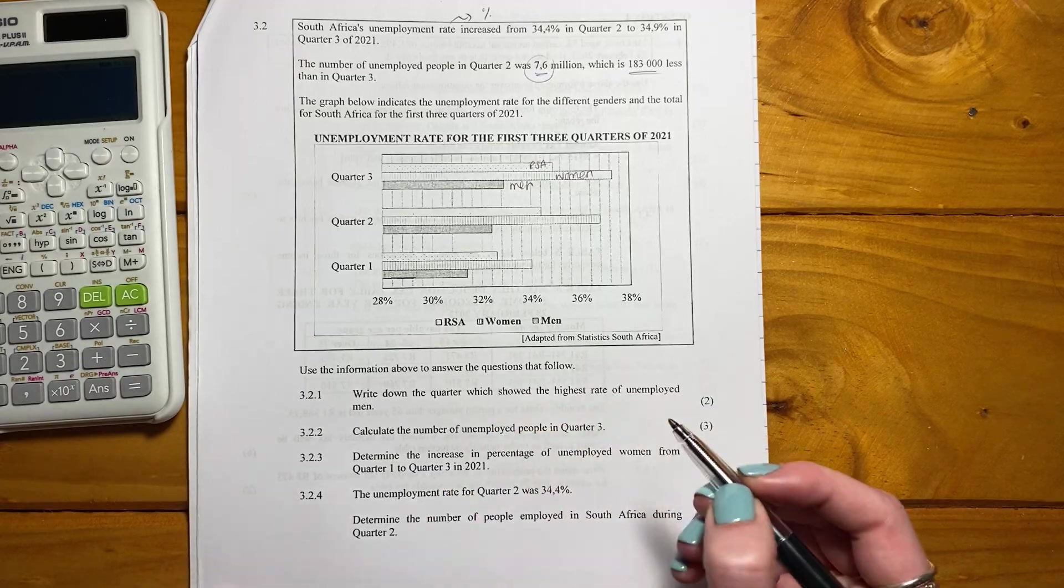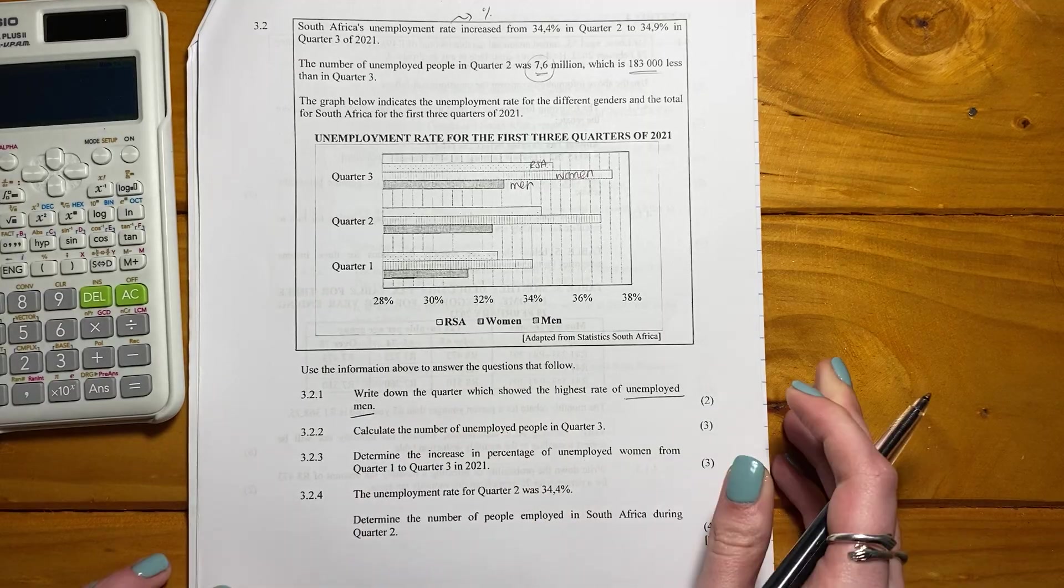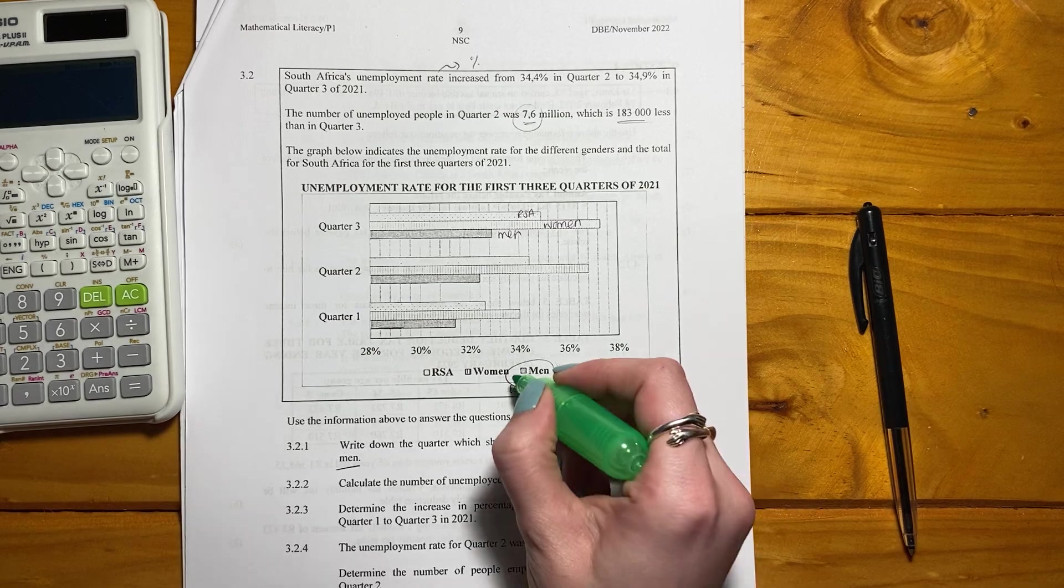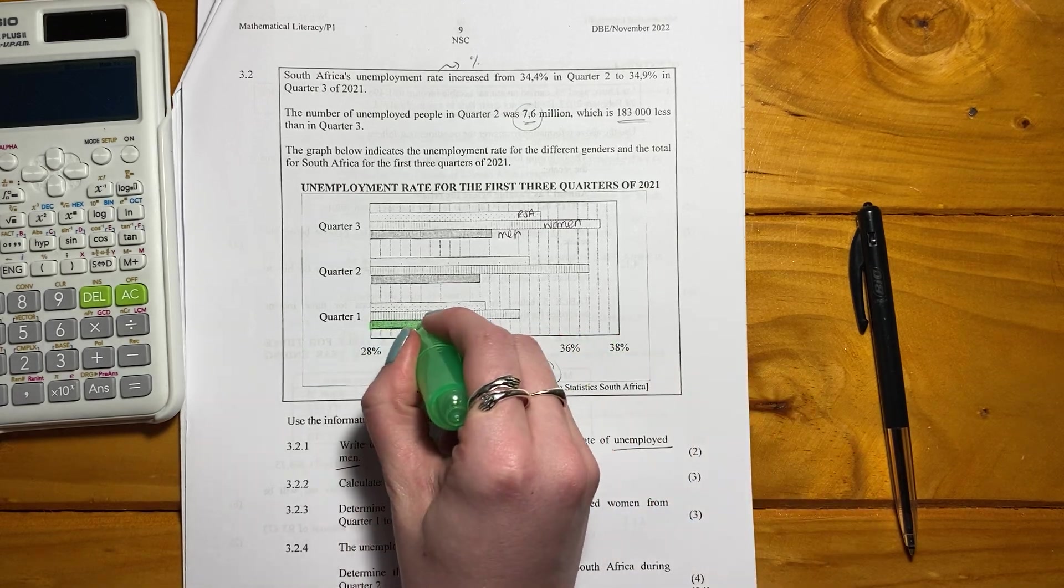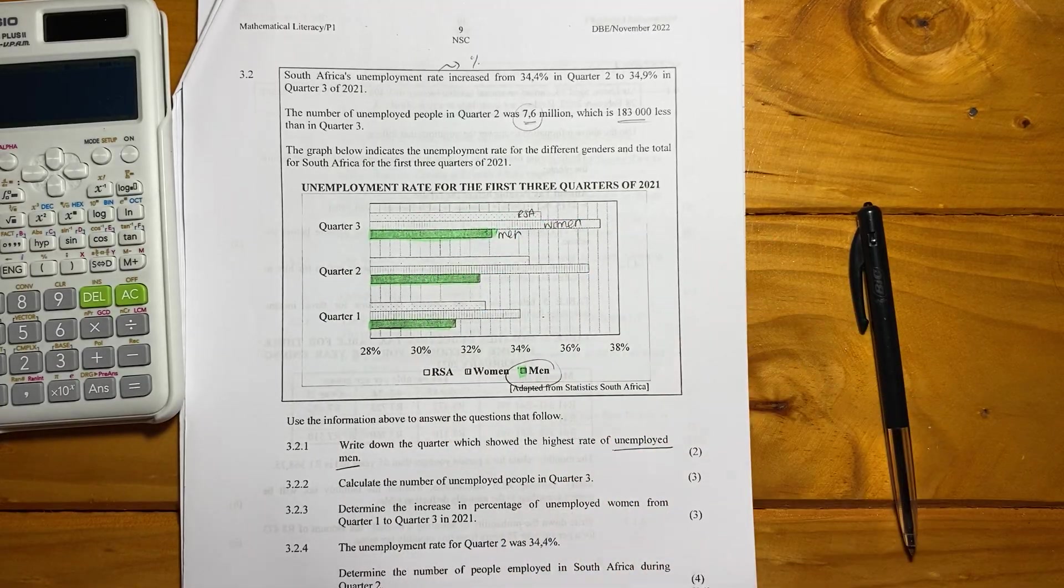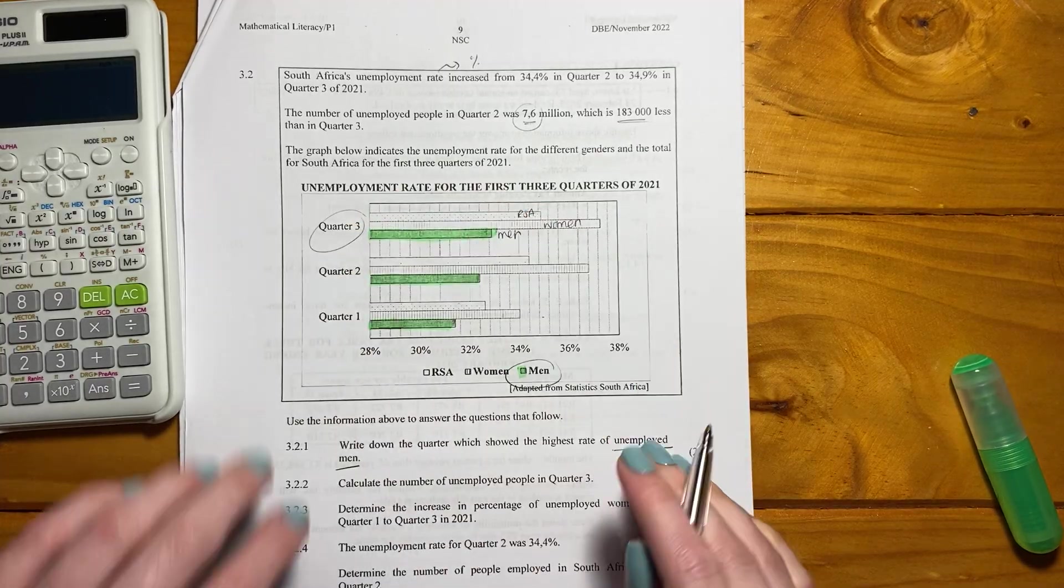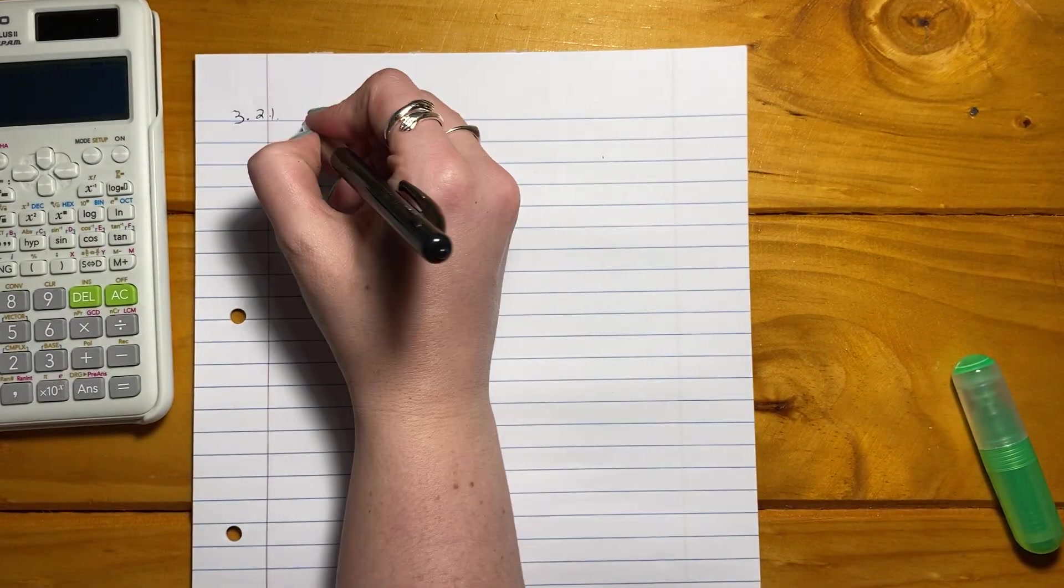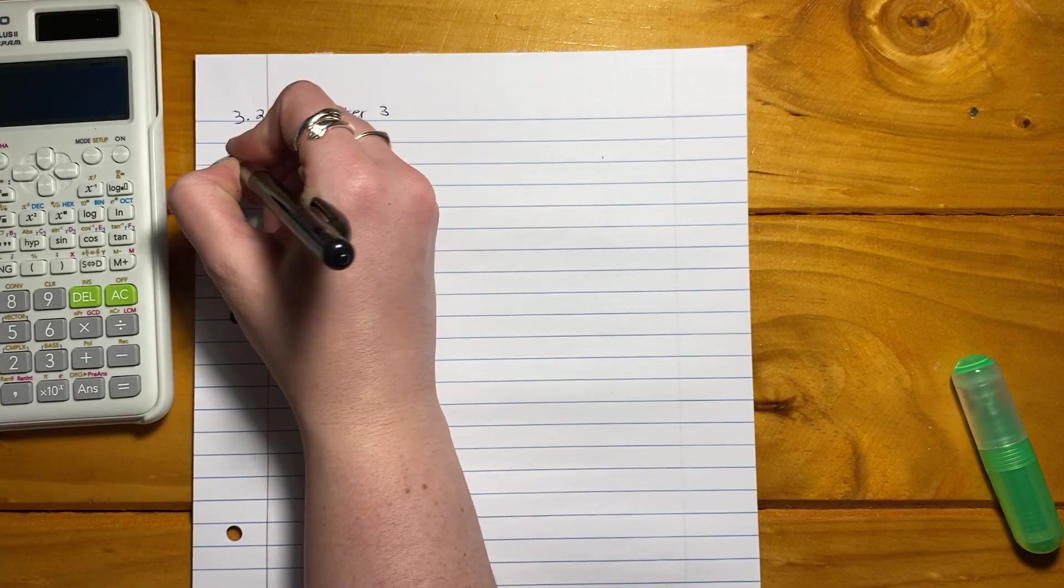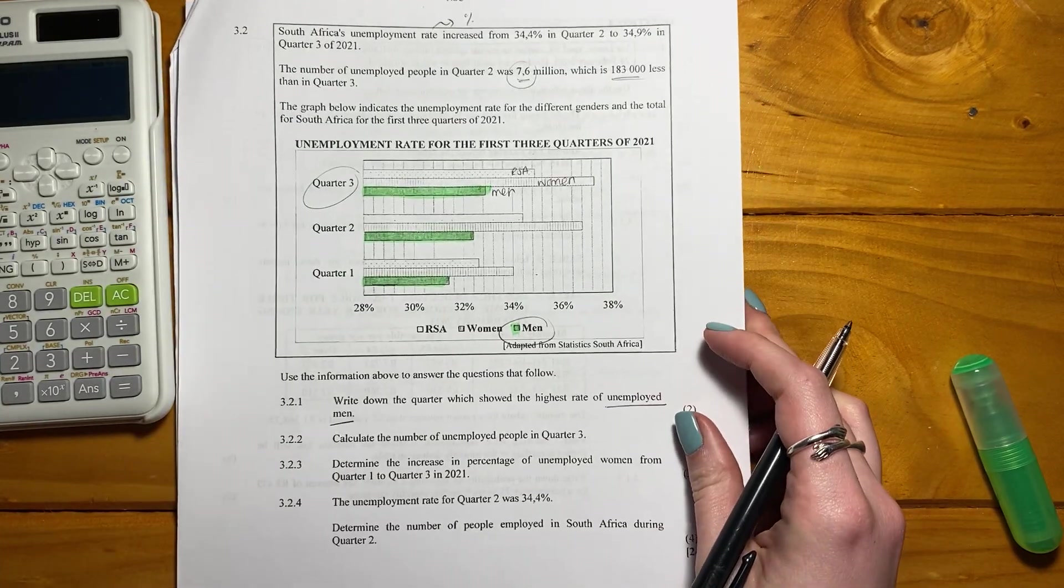It says write down the quarter which showed the highest rate of unemployed men. So let's look here, we're looking at men. I'm just going to use a highlighter here just to help me. There are men, there are men, and there are men. It's quite evident from that that the quarter that showed the highest rate would be quarter three. So go and write that on your page and say quarter three. Remember to always label your questions properly. Easy entry-level question.